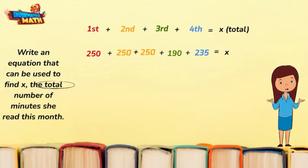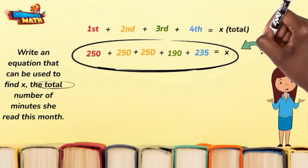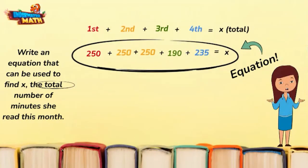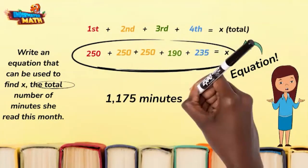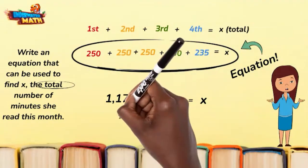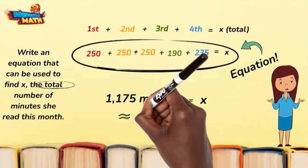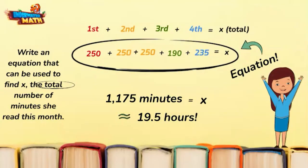We have our equation — that is a total of 1,175 minutes, which is approximately 19 and a half hours. Way to go, Ivy!